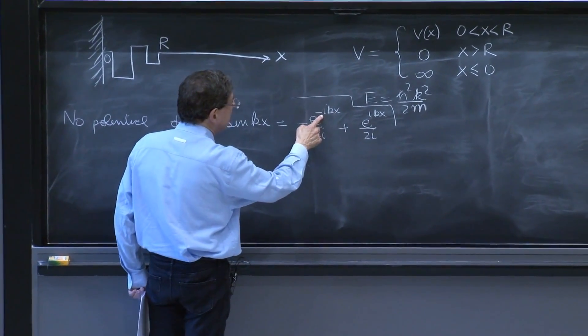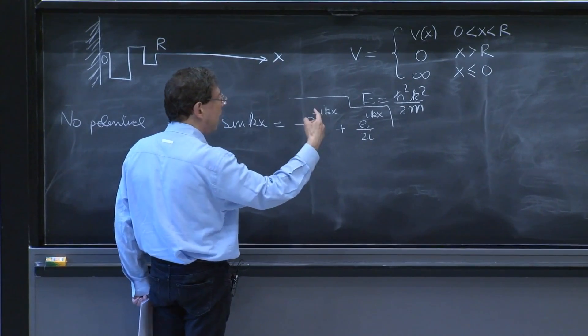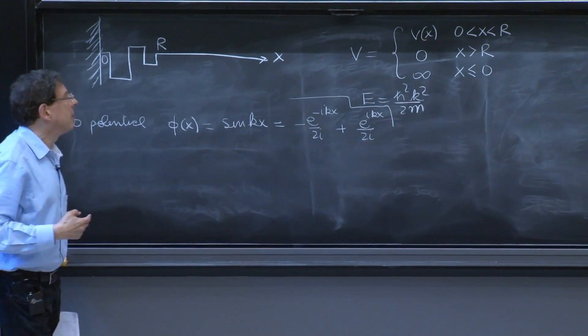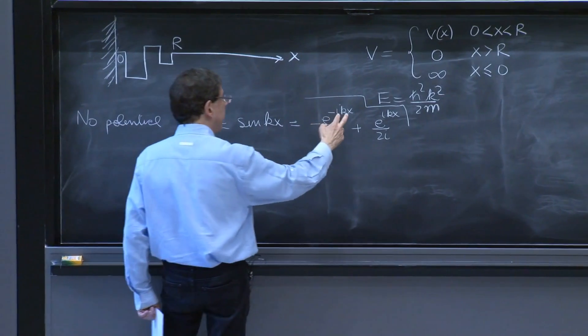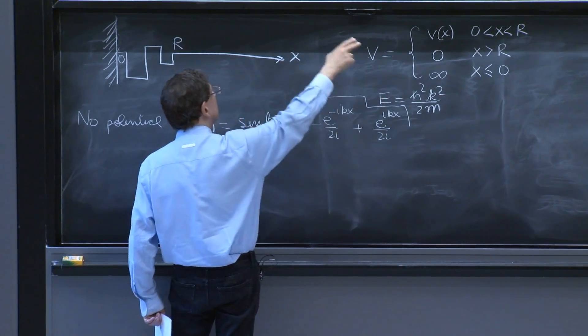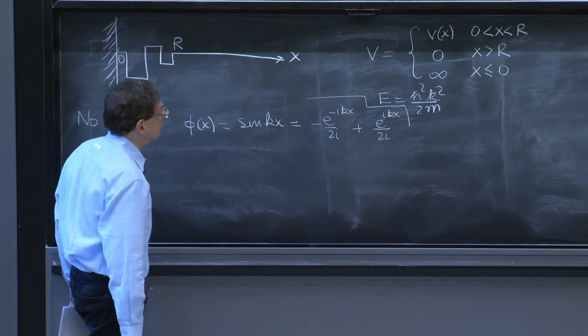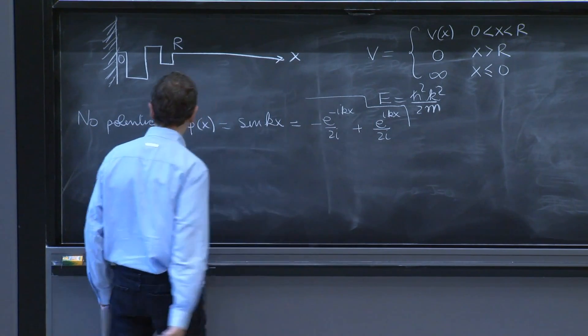Remember, the time dependence is minus iet over h bar. So this wave combined with a time is a wave that is moving towards the origin. This wave is moving outwards.